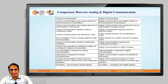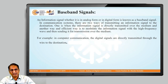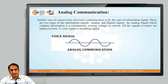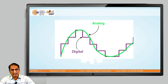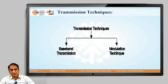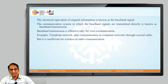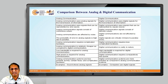The example of analog is sound, which shows analog signals, and computer data is digital. In short, today we discussed what is analog communication, what is digital communication, what is baseband signal, what are different types of transmission techniques, why modulation is required, what is modulation technique, and what is the difference between analog and digital signals.